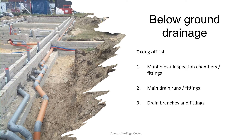When measuring inspection chambers, items such as step irons and manhole covers are generally measured separately, except on small-scale systems when the RICS guidelines recommends they can be included with the description of the inspection chamber.